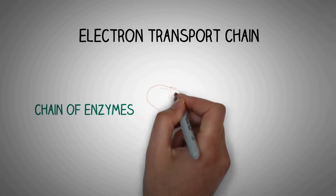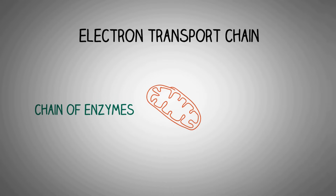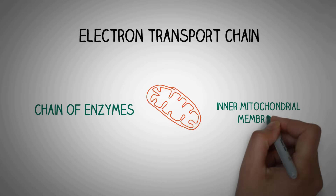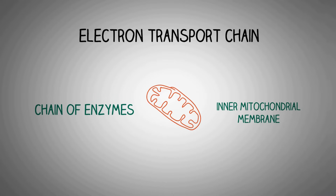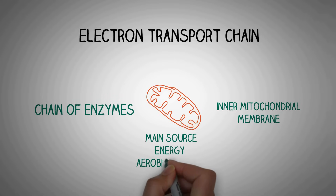The electron transport chain is a set of enzymes which is located on the inner mitochondrial membrane, and it is the main source of energy in the aerobic pathway of energy generation.